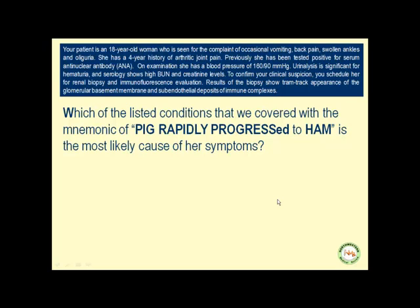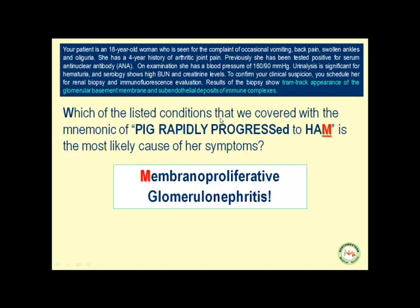Back to our case scenario. Which of the listed conditions covered with the mnemonic PEG rapidly progresses to HAM is the most likely cause of the symptoms in this patient? Pay close attention to these keywords: tram-track appearance of the glomerular basement membrane and sub-endothelial deposits of immune complexes. They all remind you of the M of HAM, which is membranoproliferative glomerulonephritis — MPGN is the correct answer.